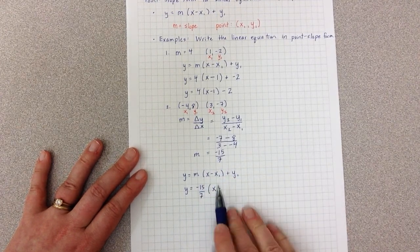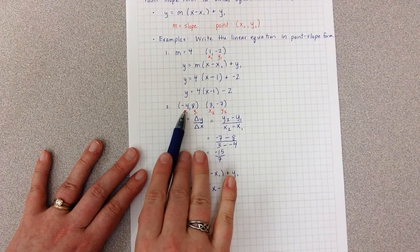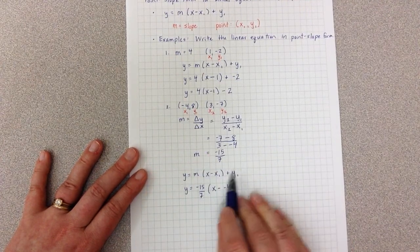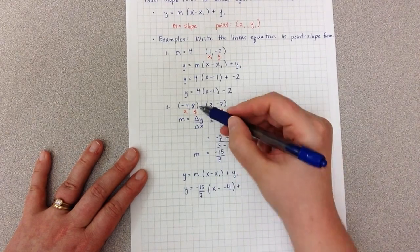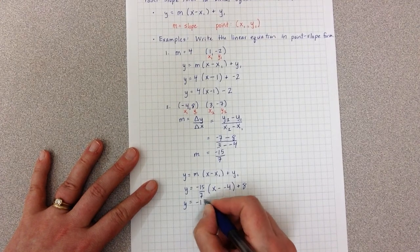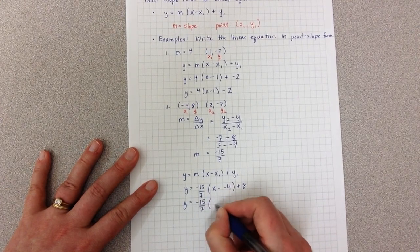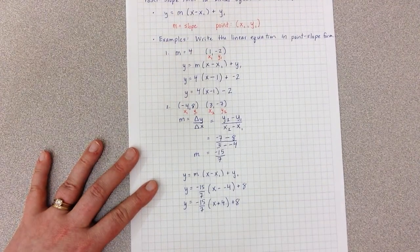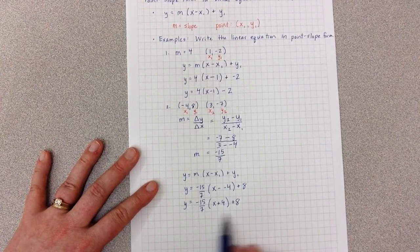I have x minus, and I replace my x1 with this first point, minus 4, plus y1, 8. And I can simplify that to be negative 15 over 7 times x plus 4 plus 8. So this is using the first point.